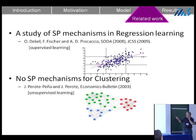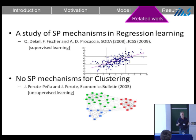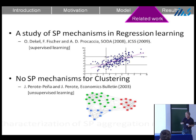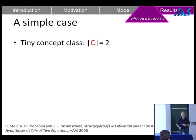Related work: earlier work on unsupervised learning — where there are no labels on input data and it must be put into clusters — showed that under certain weak assumptions, there are no strategy-proof mechanisms. There is also related work on strategy-proof aggregation rules.